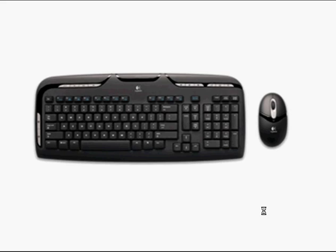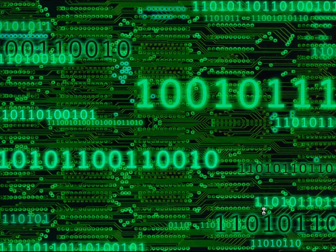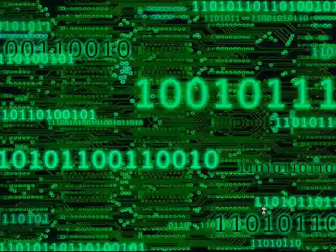Once we've input data into the computer, it gets stored as different series of ones and zeros. And storage of ones and zeros is known as something called binary.